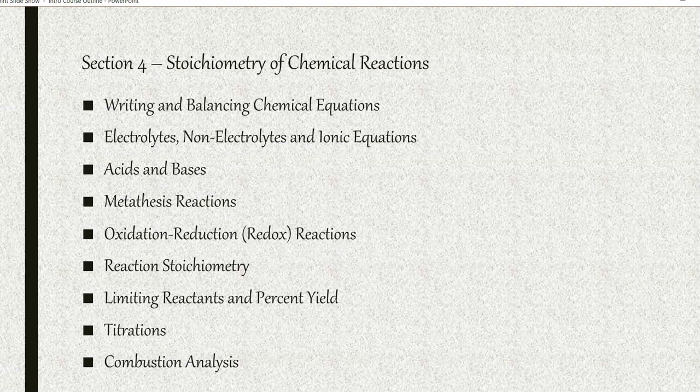In section four, we get to the heart of chemistry with stoichiometry. First we're going to learn about writing and balancing chemical equations, and introducing electrolytes, non-electrolytes, and ionic equations. Chemistry of acids and bases will next be introduced, followed by metathesis reactions and oxidation reduction reactions. We then get into the chemical arithmetic called stoichiometry, which includes limiting reactants and percent yield. Following that, we'll look at titrations and combustion analysis.